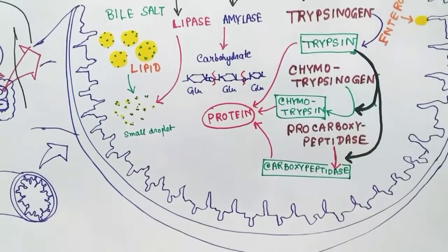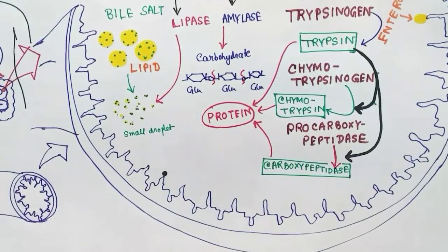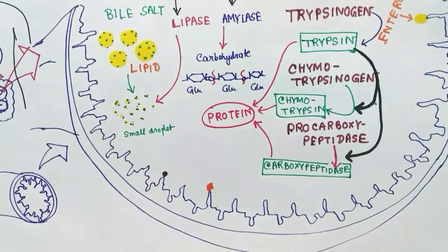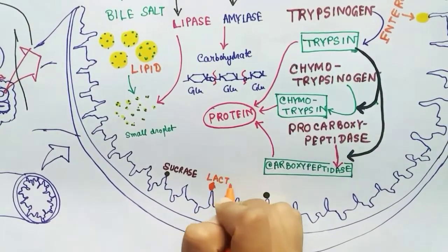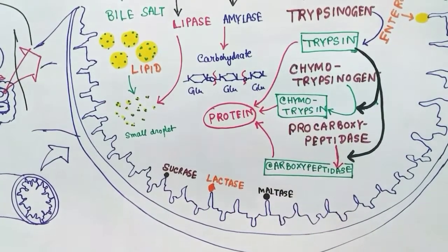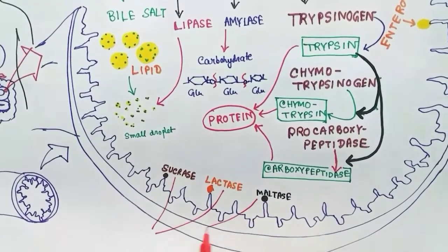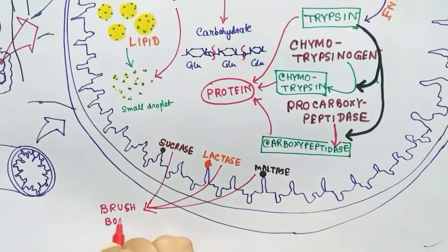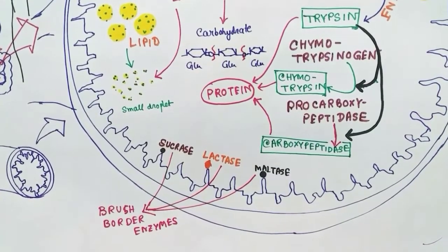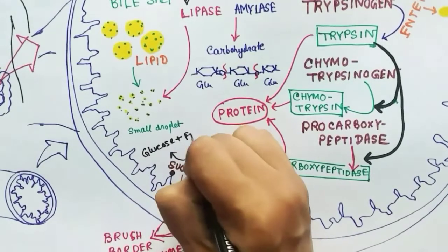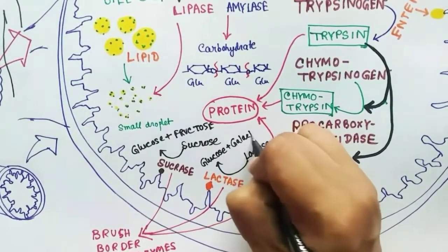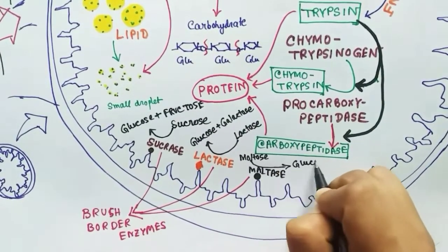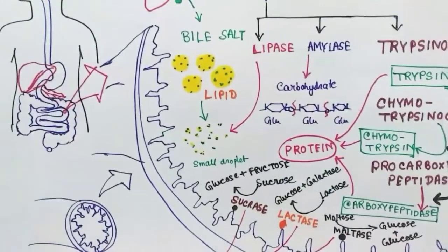Next, some enzymes are attached to the villi of the small intestine lumen — these are the brush border enzymes. Some of them are sucrase, lactase, and maltase. Sucrase works on sucrose and breaks it down into glucose and fructose. Lactase breaks down lactose into glucose and galactose. Maltase breaks down maltose into glucose molecules.